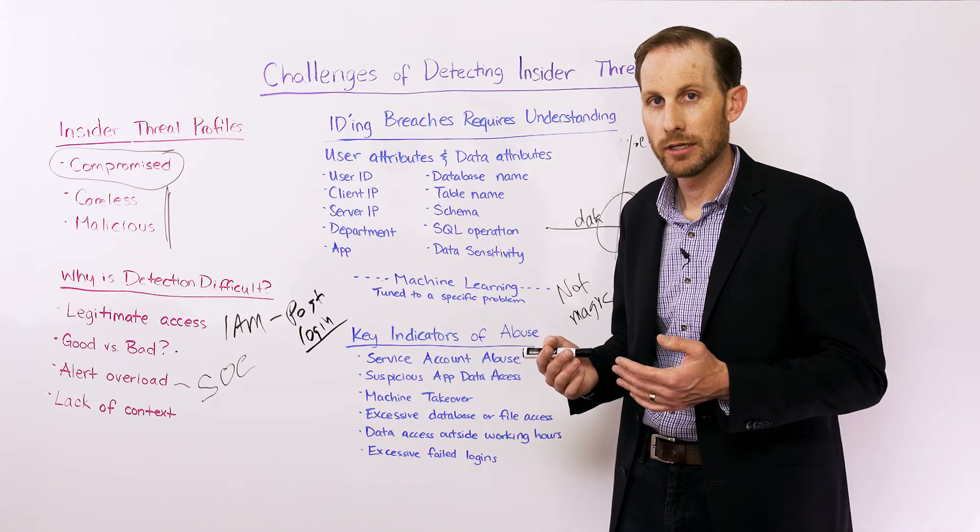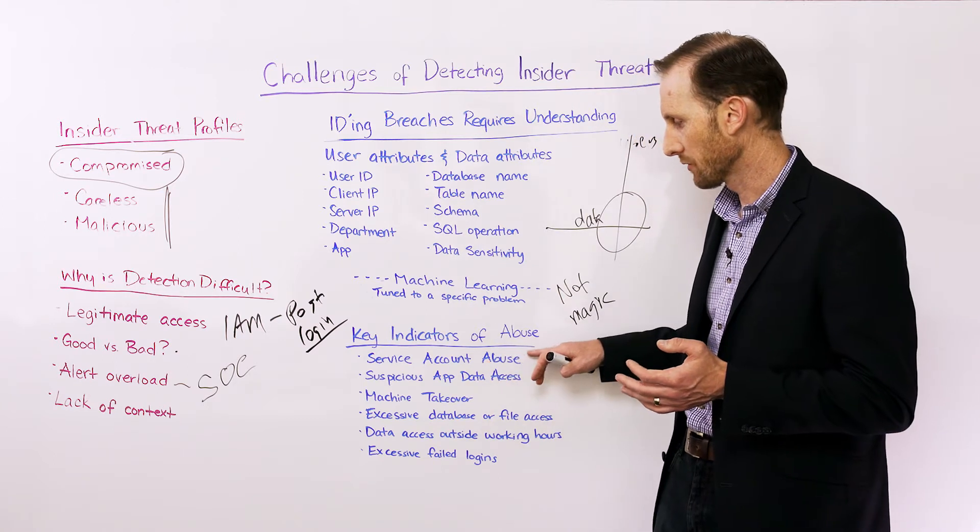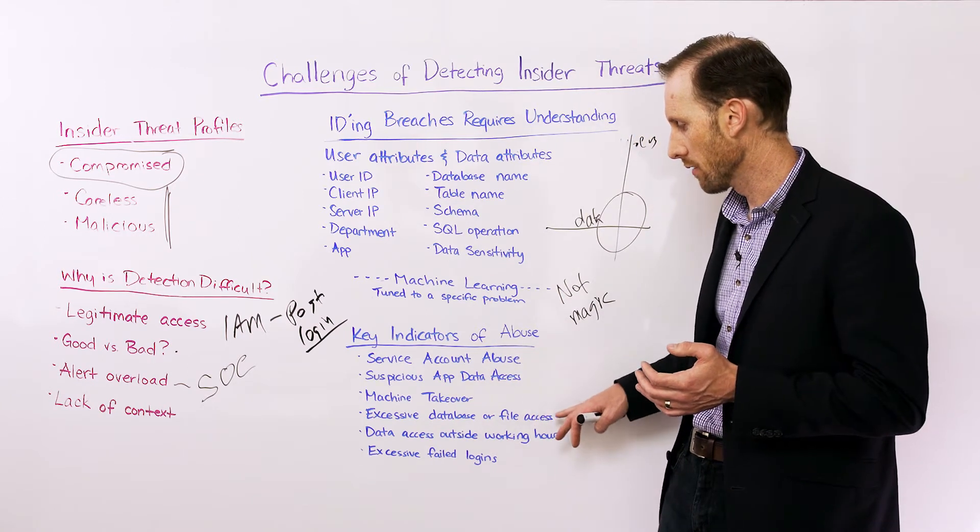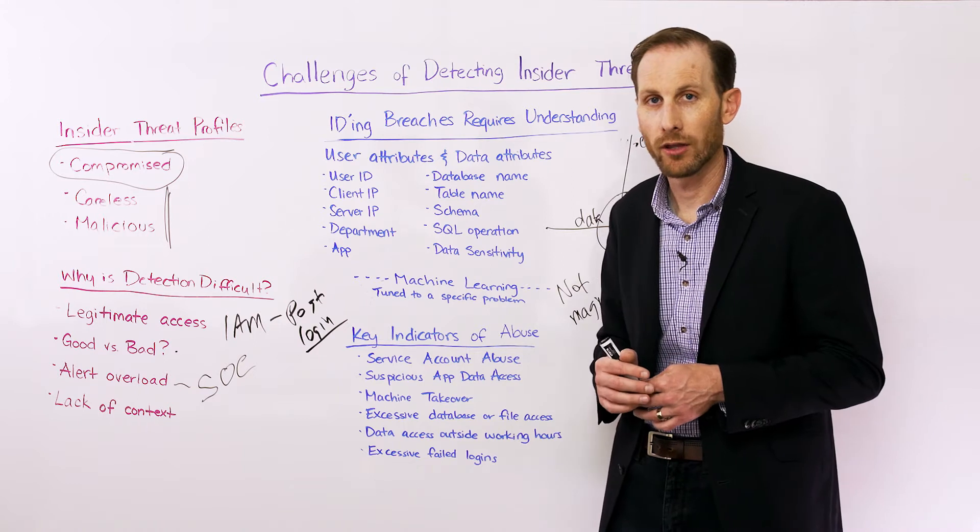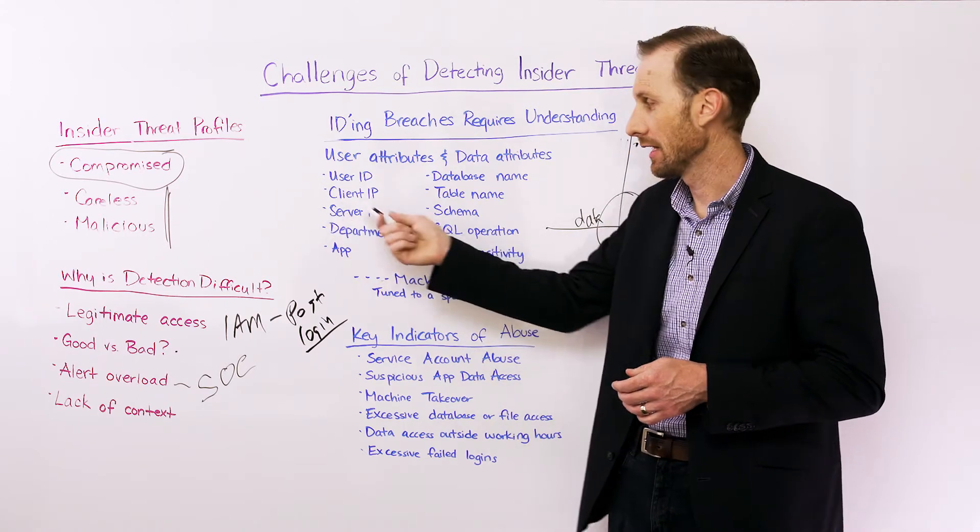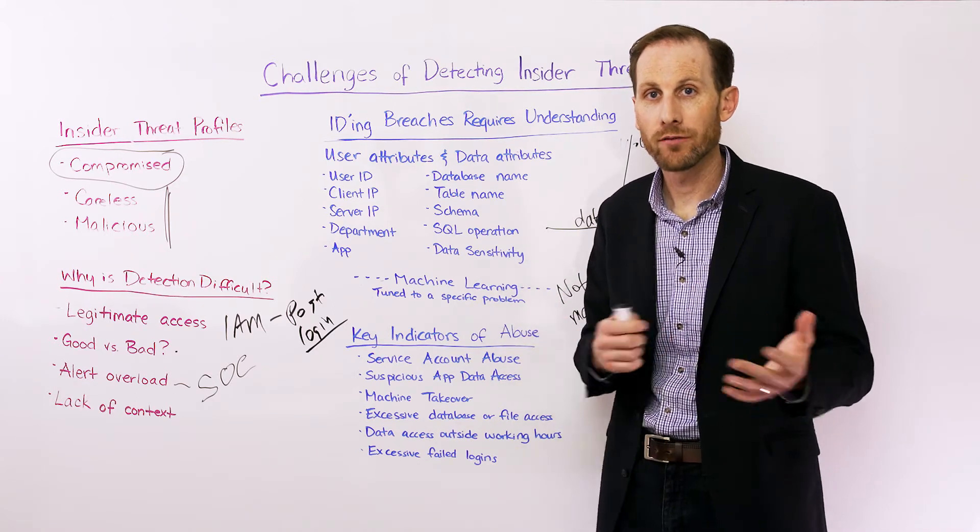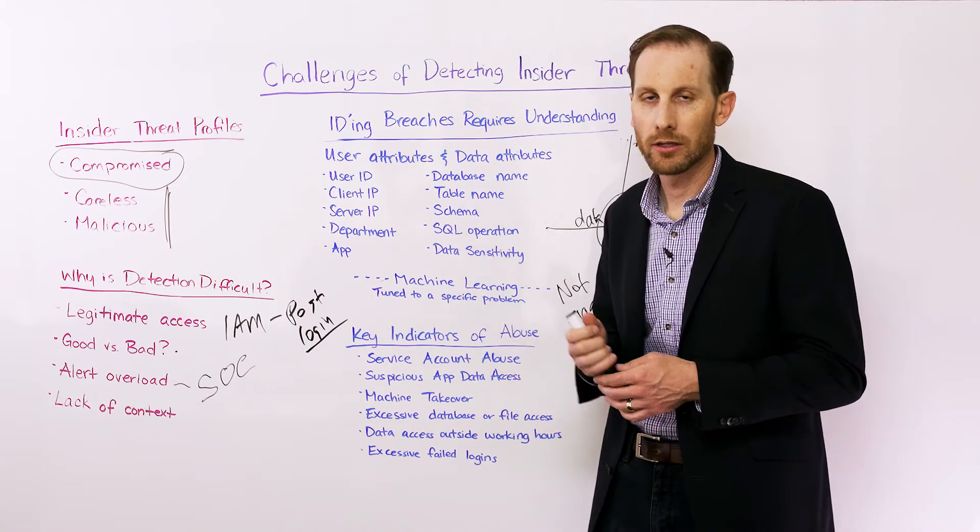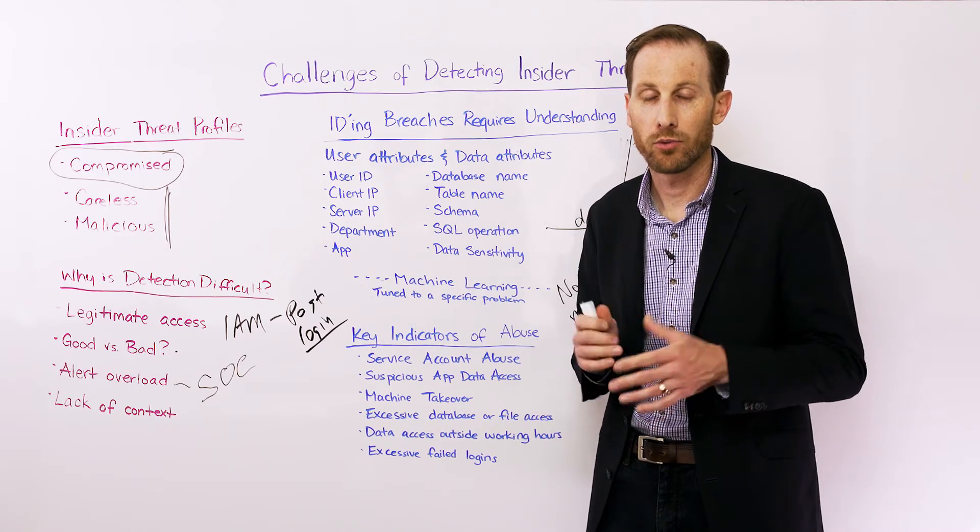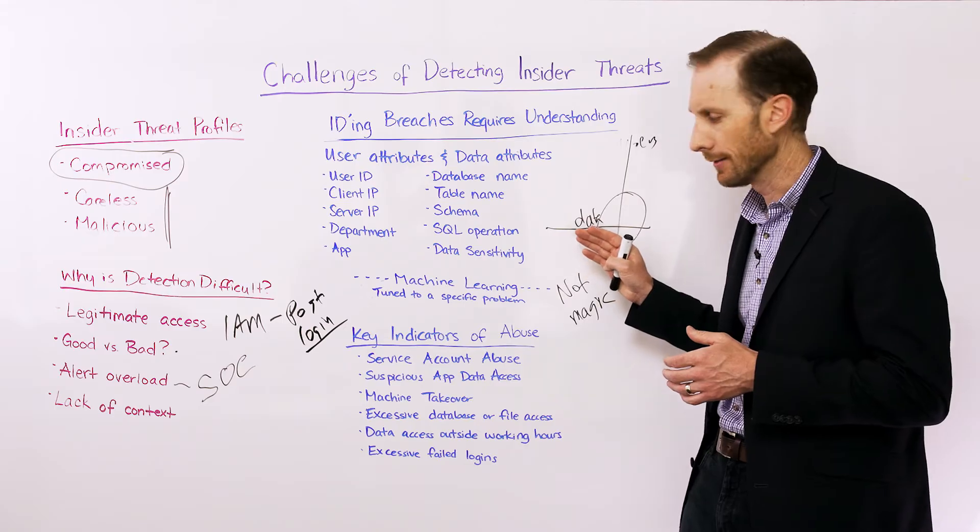And that really leads us to the next section here, which is key indicators of abuse. So one of the things that we've done here at Imperva is really taking a laser-like approach to things like service account abuse and machine takeover, excessive database or file access, and done that in the context of a deep understanding of how users interact with data. And this is really the key to getting some value out of machine learning, but also solving this insider threat profile problem is having a deep understanding of this intersection between users and data.